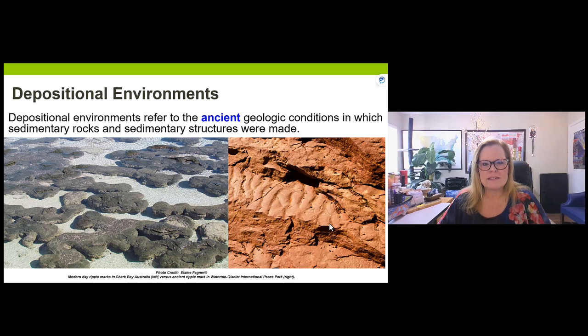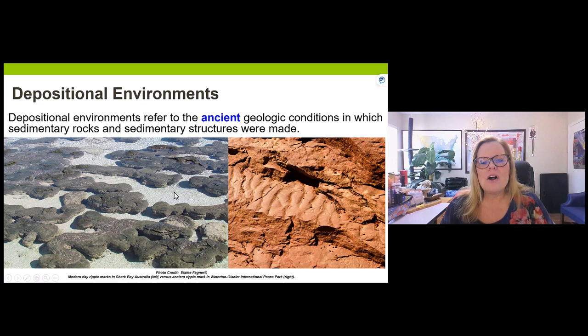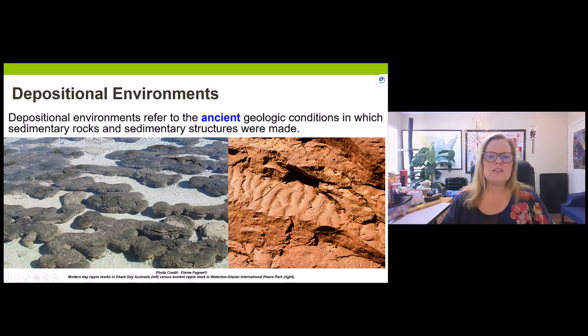Here is Shark Bay, Australia — one of only two places on the planet where stromatolites are made. You can see ripple marks in the sand. We can use these kinds of clues, along with other features in rocks, to help understand the conditions by which rocks were formed.